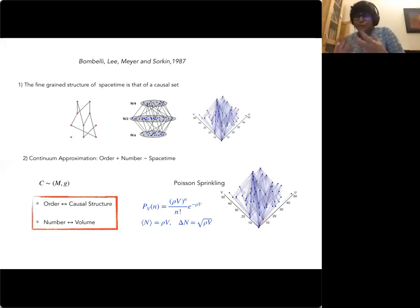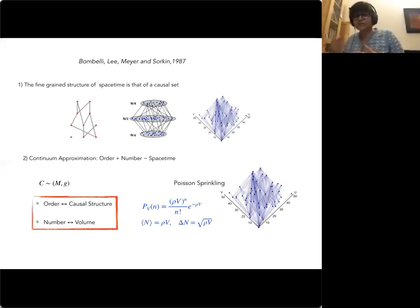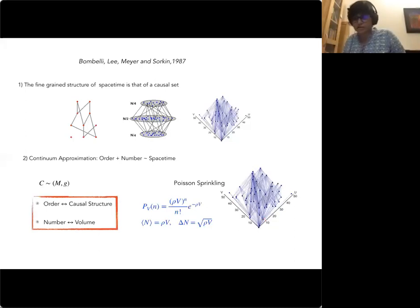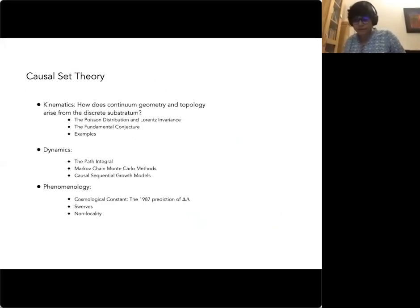A key question is: if all I have is a causal set — a discrete set of points with order relations — how do I recover the continuum properties I know and love? Dimension, topology, geometry — how do I get all of that from just a set of order relations? It seems mind-bogglingly hard, and it is in many ways, but we have a library of results, which I call kinematics.